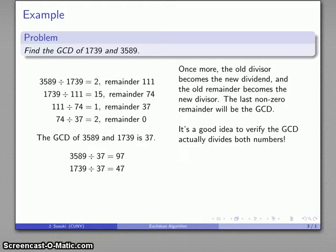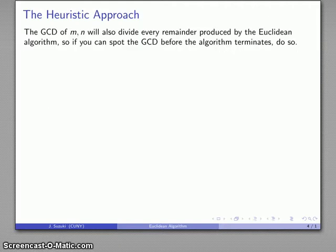Incidentally, this also gives us the factorization of the two numbers as a product of 37, which is prime, and some other number, which in this case also happens to be prime. So if you had tried the factor-and-collect-GCD method, you'd have to try out all the primes up to 37 before getting your initial factorization. Although the Euclidean algorithm is an algorithm, it's worth thinking about a heuristic approach. The GCD of the two numbers will divide every remainder produced by the algorithm, so it's possible that we can spot the GCD before the algorithm terminates, and save ourselves the extra effort.